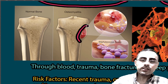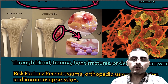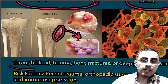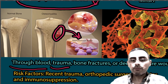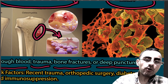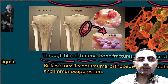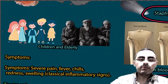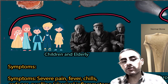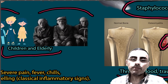You can see on the images the infection of bone and Staphylococcus aureus. This bacteria can spread through blood because of trauma, bone fractures, or deep puncture wounds, which can cause bone infection. Bone infection is most common among vulnerable people such as children and the elderly.